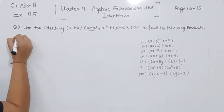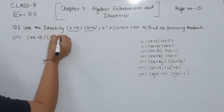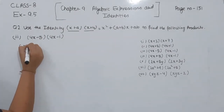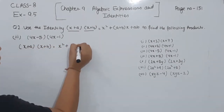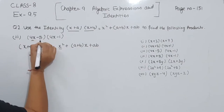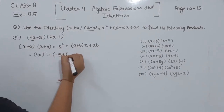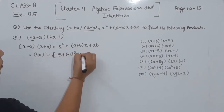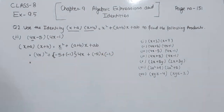Now comes part 3. We are having (4x − 5) and (4x − 1). We are going to use the same identity (x + a)(x + b) = x² + (a + b)x + a·b. Here x is 4x, a is −5, and b is −1. So we have (4x)² plus (−5 + −1) multiplied by 4x plus (−5)(−1).